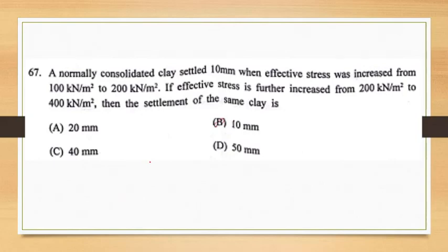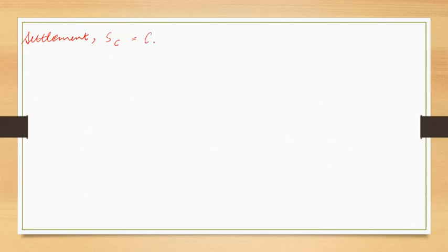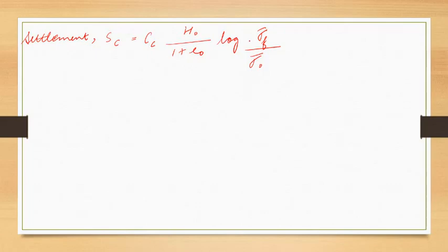The next question: a normally consolidated clay settled 10 mm when effective stress was increased from 100 kN/m² to 200 kN/m². If effective stress is further increased from 200 kN/m² to 400 kN/m², the settlement of the same clay is — now settlement s_c is given by the formula: s_c = (c_c × h₀) / (1 + e₀) × log(σ_f' / σ₀'), where c_c is the compression index, h₀ is the initial layer height, e₀ is the initial void ratio, and σ₀', σ_f' are the initial and final pressures.